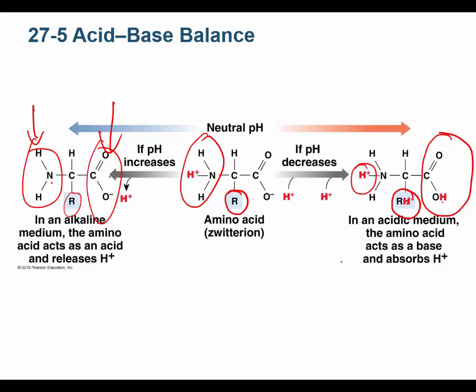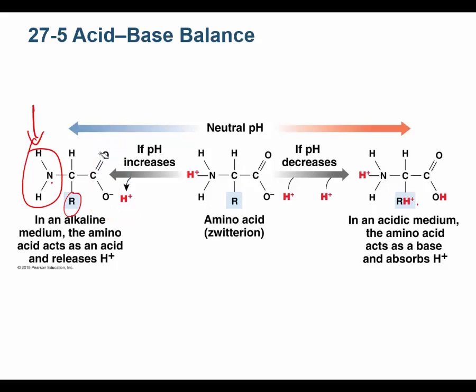Likewise, if the solution becomes more basic, the amino acid can start releasing these protons — release one and become NH2, release another and become COO-. So my amino acid can both accept and release protons, and that's what all buffers must be able to do. To resist pH change, you can't just donate protons — you must also be able to accept protons and resist the acidic shift. Buffers must be able to accept and donate protons, and amino acids can do that. They are good buffers.